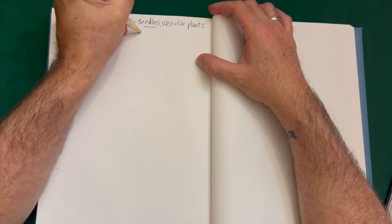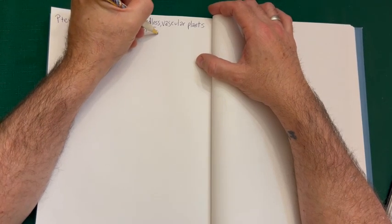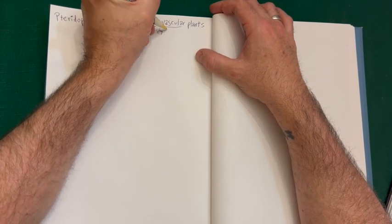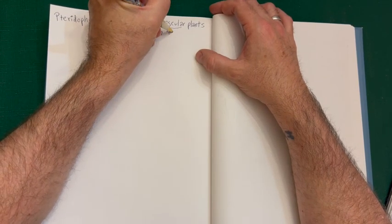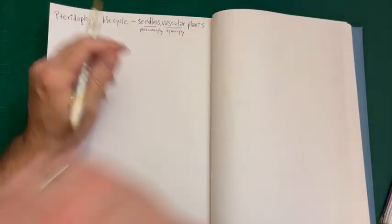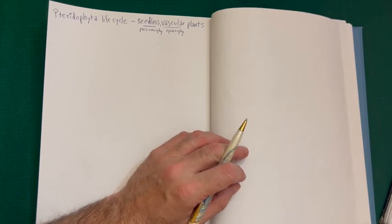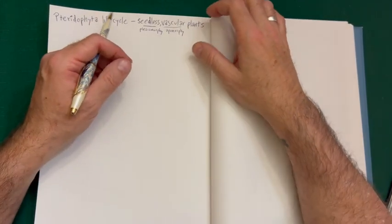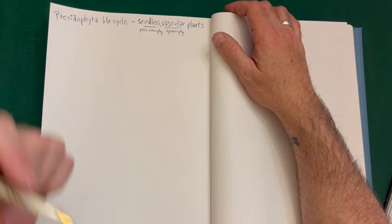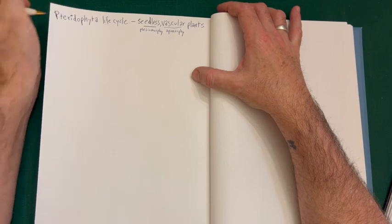Being seedless is actually a plesiomorphy — an ancestral condition — but being vascular is an apomorphy, a derived condition. Seedless vascular plants on their own are a grade; they're a paraphyletic group, while the vascular plants altogether, including the seed plants, represent a clade.